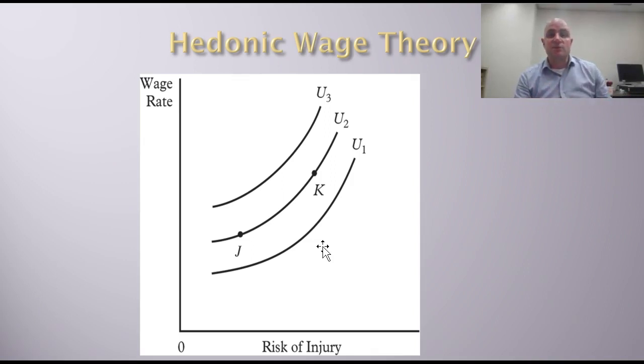These curves are also convex because when risk is high, you're willing to give up more income to lower that risk. But if risk is low, you're not willing to give up as much.